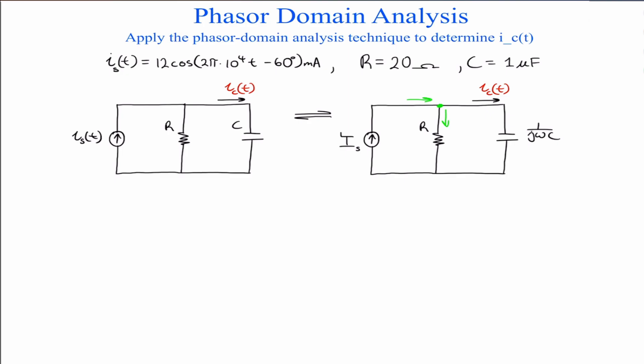And our current source, which we transform over, is equal to 12 times the complex exponential e to the j minus 60. Our impedance for our capacitor is equal to minus j times 15.92 ohms. This is in milliamps.